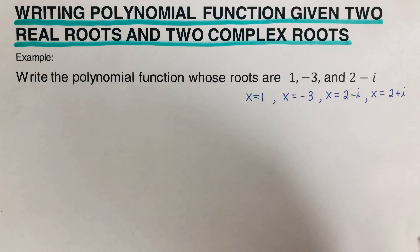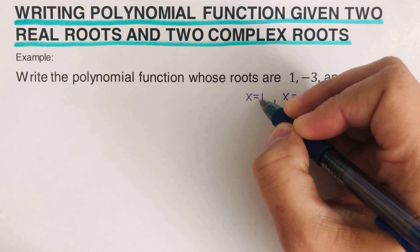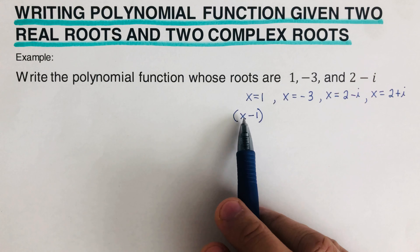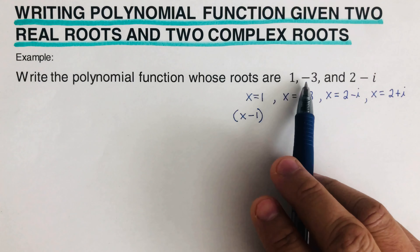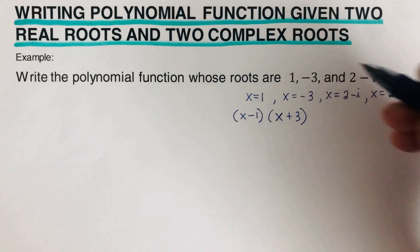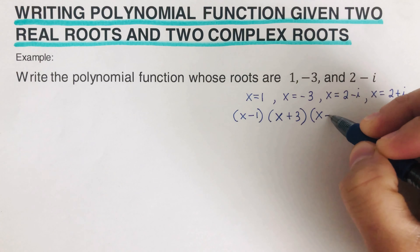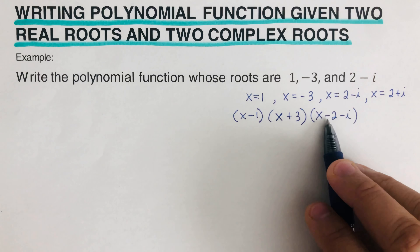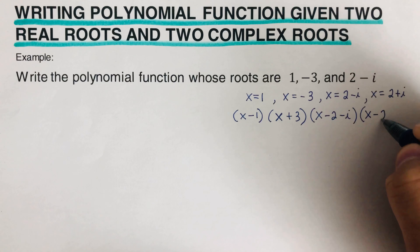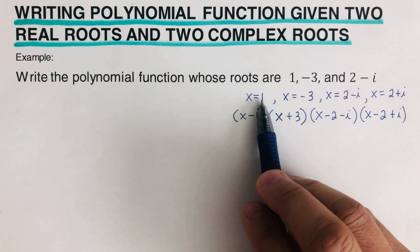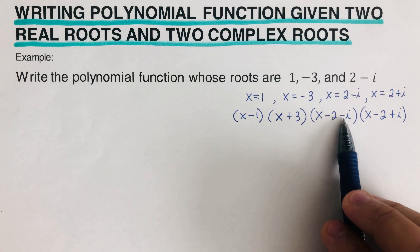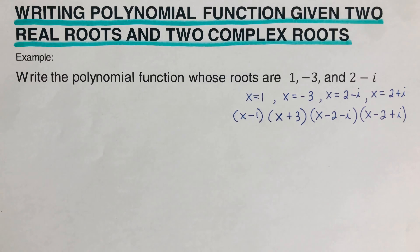From here we convert to factored form using the zero product property backwards. x = 1 becomes (x - 1), x = -3 becomes (x + 3), x = 2-i becomes (x - 2 + i) — we switch the sign of positive two to negative two and keep the sign of -i — and x = 2+i becomes (x - 2 - i).